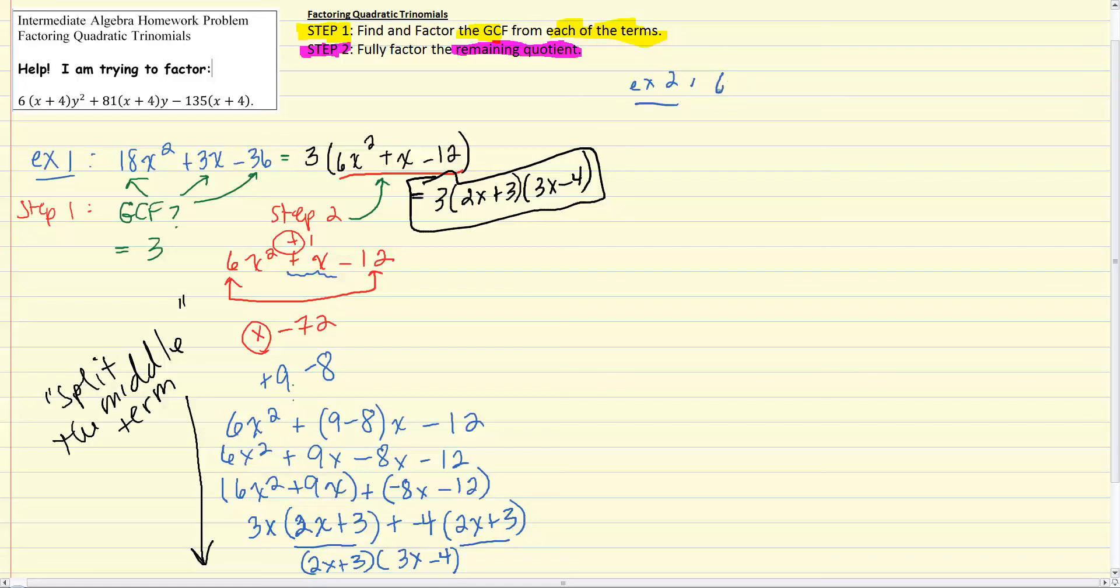We have 6 times the quantity x plus 4y squared plus 81 times x plus 4y minus 135 times x plus 4. Same steps. Step 1, GCF for each of the terms.